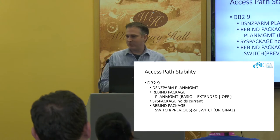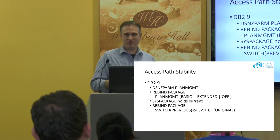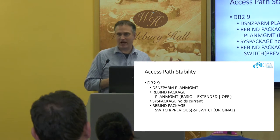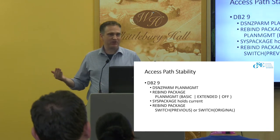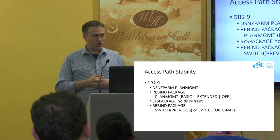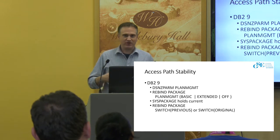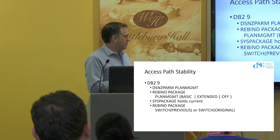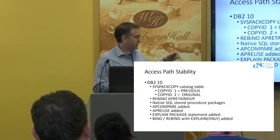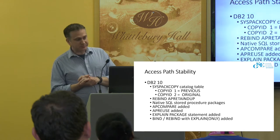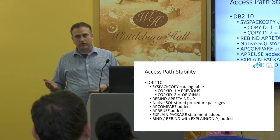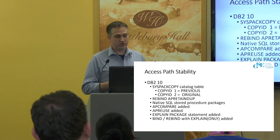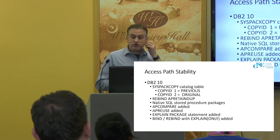One of the complaints about this back in version 9 — it was delivered post GA — was there was no catalog support for it. SYSPACKAGE told you what the current package looked like, but there was no way to tell what other copies of the package existed. Some of my customers would keep spreadsheets of when they had done these switches. We got catalog support in version 10 in the form of a catalog table called SYSPACKOPY. They also extended support to SQL PL programs — native stored procedures — and added two new bind parameters: AP compare and AP reuse.